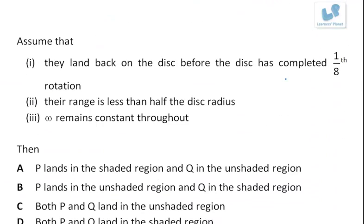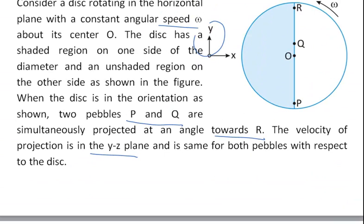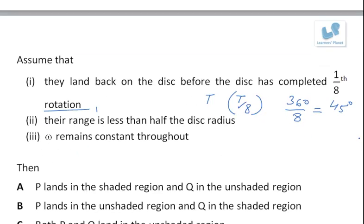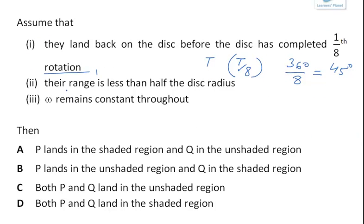Now we have to assume that they land back on the disk before the disk has completed one eighth of the rotation. That means let us say the time is P, so within total time period of P by 8 they finish off. So this unshaded portion has turned by an angle of 360 divided by 8, that is 45 degrees.